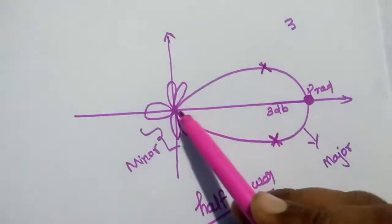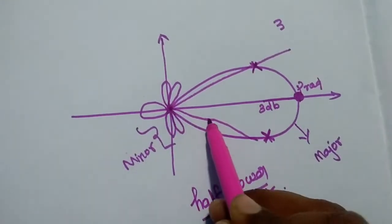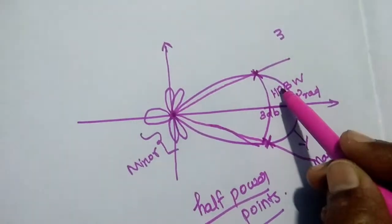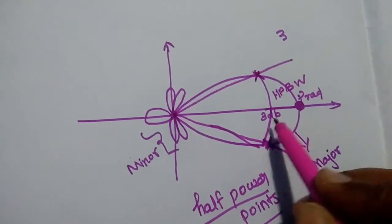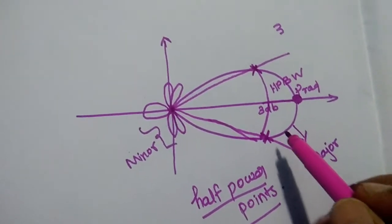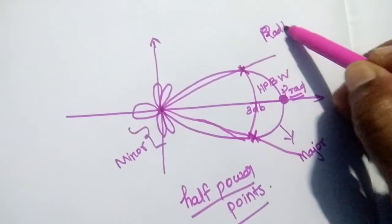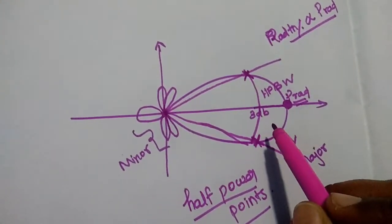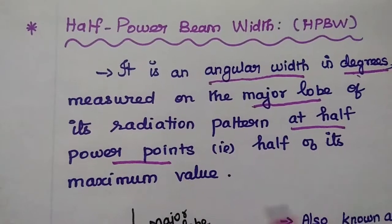Once the points are marked, we draw straight lines from the origin to those points. The angle between these lines is known as the half power beam width — 3 dB down from the maximum radiation. At this 3 dB level, the radiation intensity is half. Since radiation intensity is directly proportional to the power radiated, at this point it has half of its power.